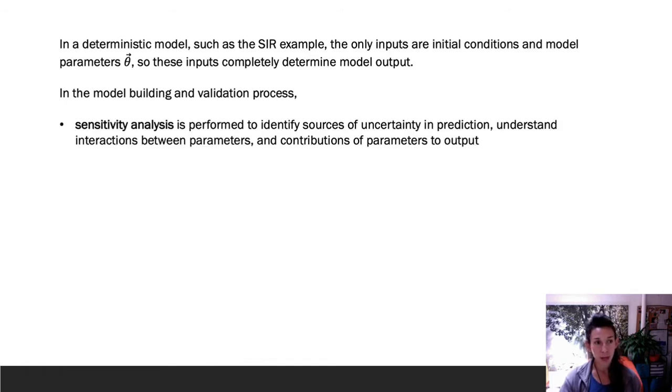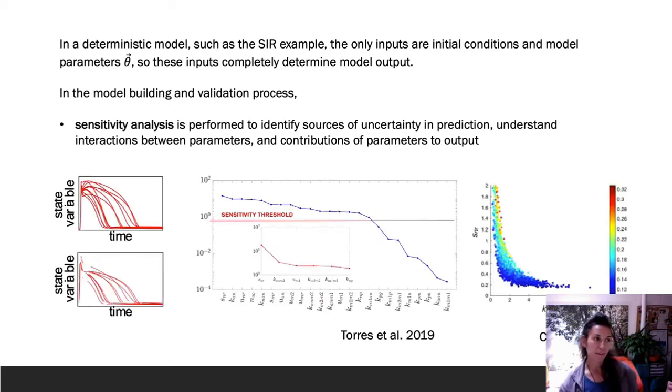During the model building and validation process, one of the things that we do, or we should do anyway, is sensitivity analysis to identify sources of uncertainty, whether that's uncertainty inherent in the model or uncertainty from data collection when we actually estimate the parameters. Often we want to understand how parameters interact with each other, how we can vary parameters to get different behavior from the model. So often we will identify confidence or prediction intervals around them and explore what happens if we vary them in concert or individually or pairwise.